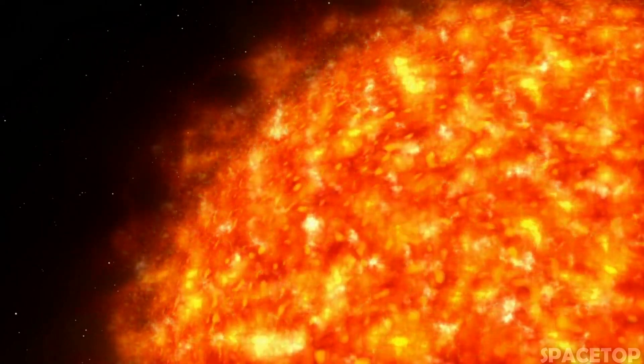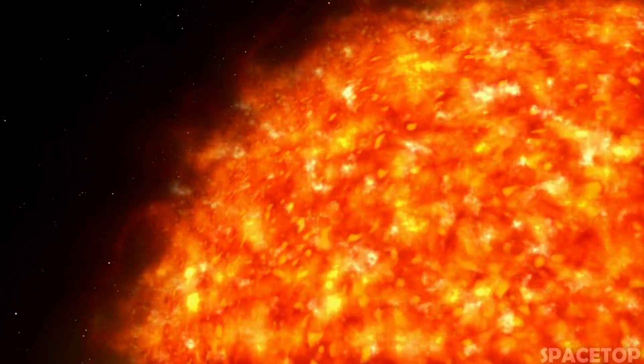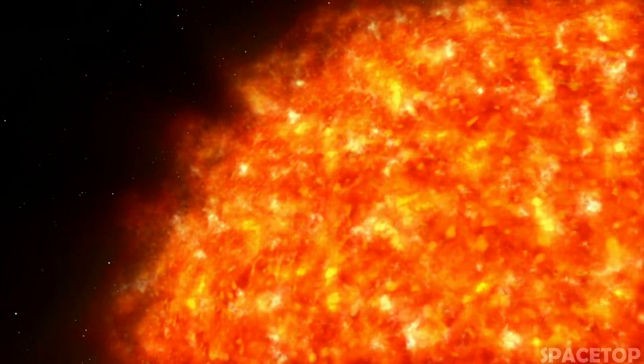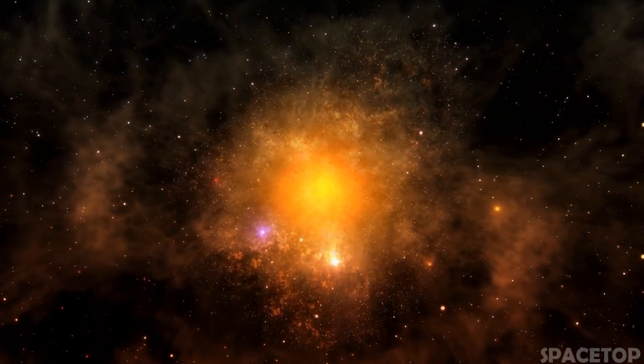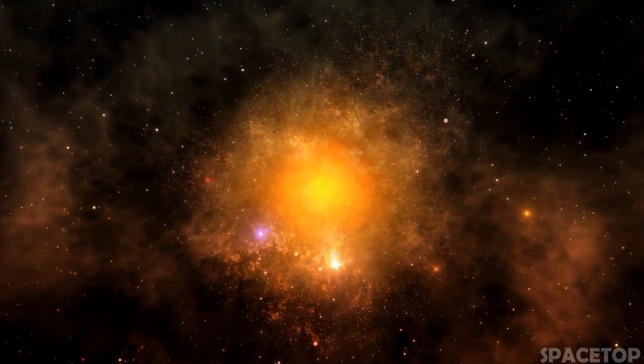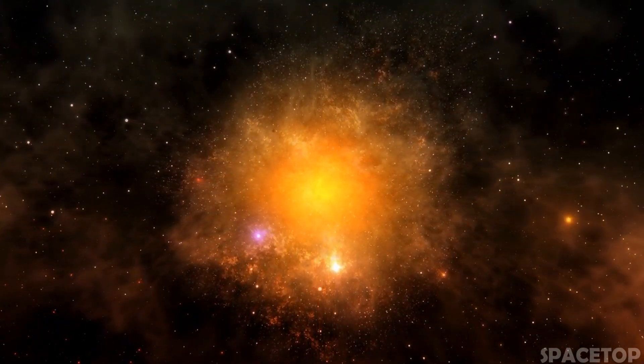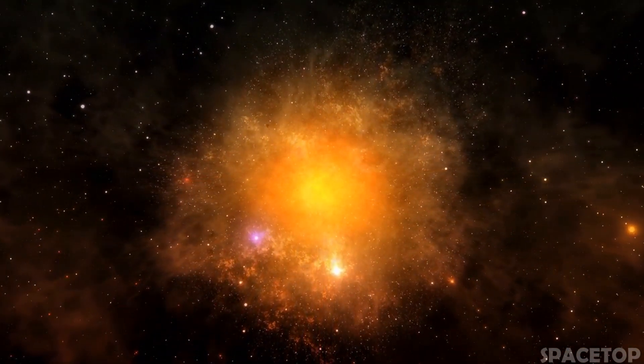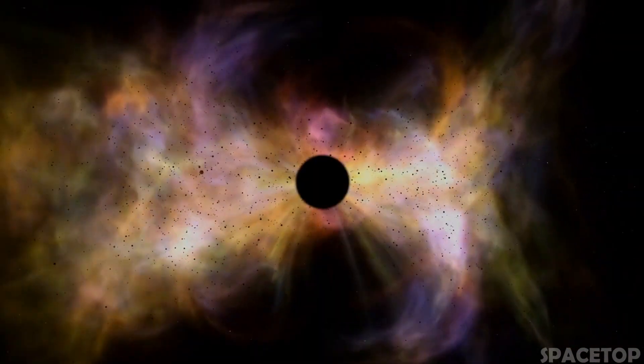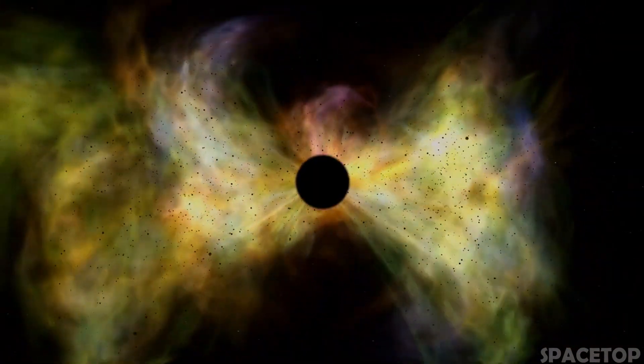Because its brightness and radius are constantly changing, its outer layers are extremely unstable. The star regularly throws millions of tons of incandescent gas into space, and this forms giant prominences. As they cool down, they contribute to the gas nebula surrounding Betelgeuse.